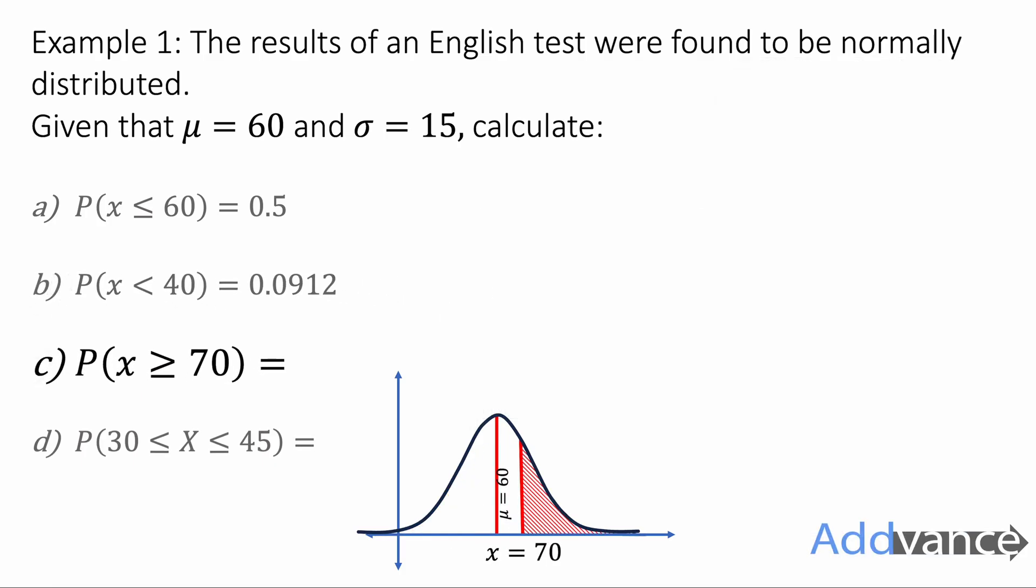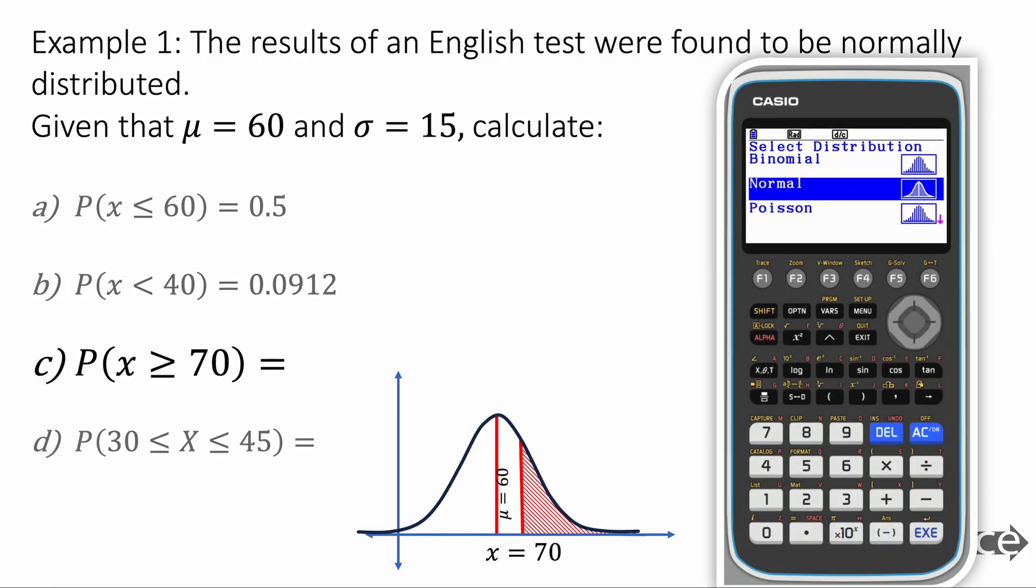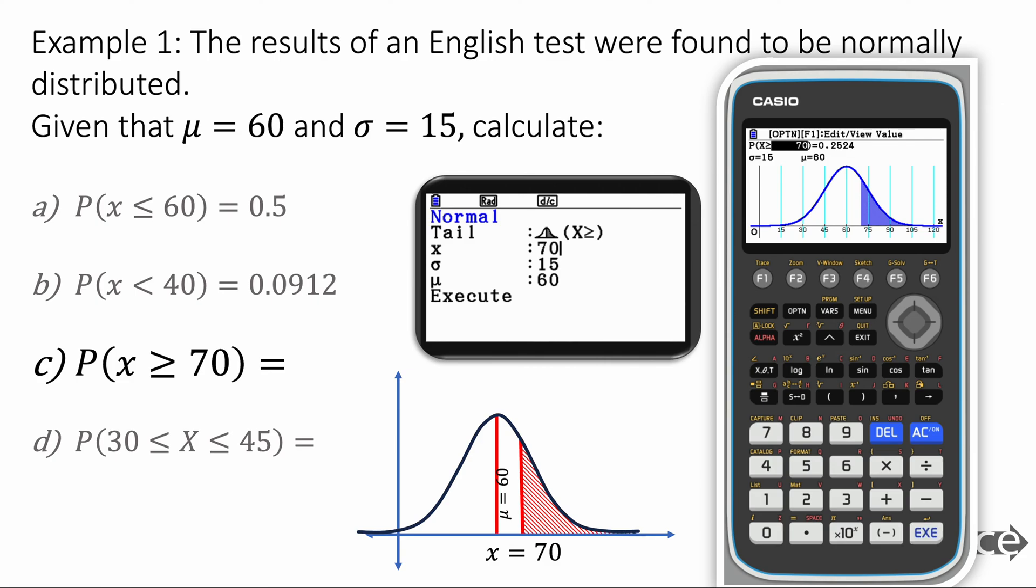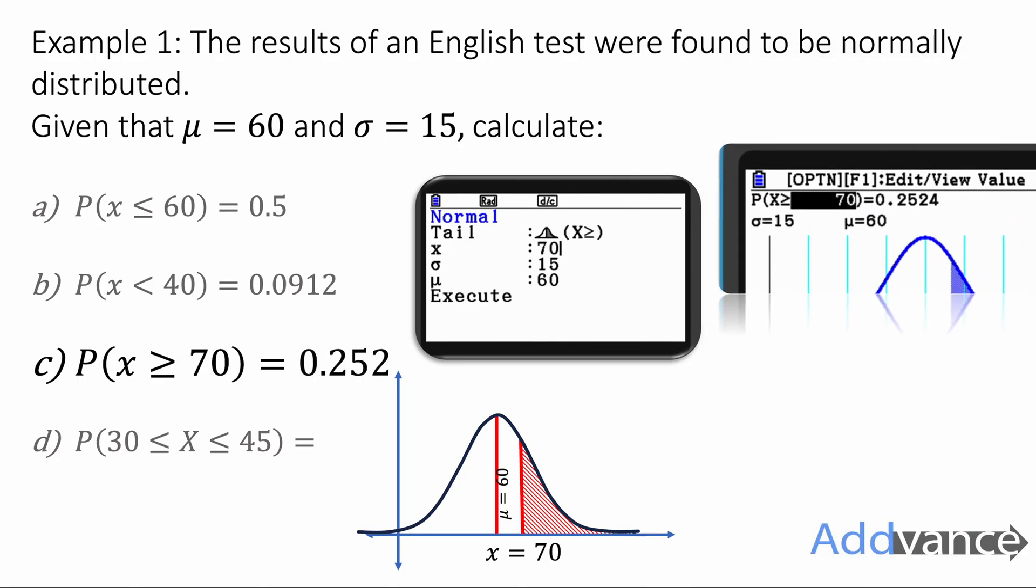Now let's see that again for x is more than or equal to 70. We're going to choose normal distribution again from our distribution thing. The tail is on the right here because we're going more than or equal to. X is 70, standard deviation is 15 and the mean is 60. We find the probability here is probability x is more than or equal to 70 to be 0.2524. And that's it. We just copy that probability down and we write it as 0.252 to three significant figures.